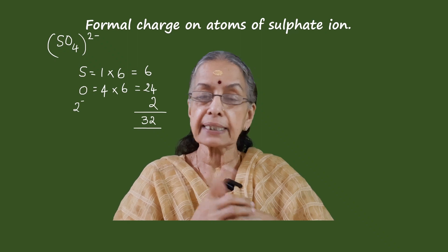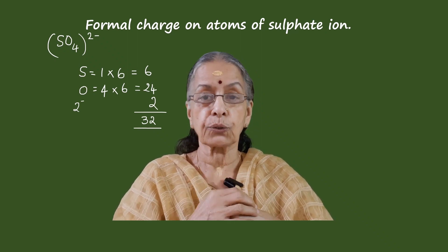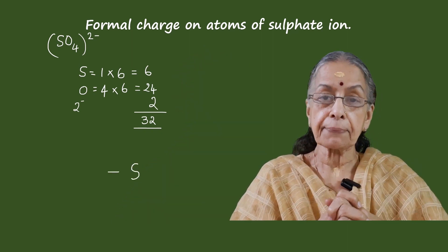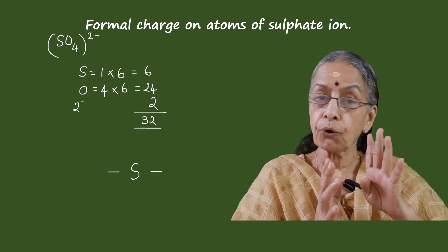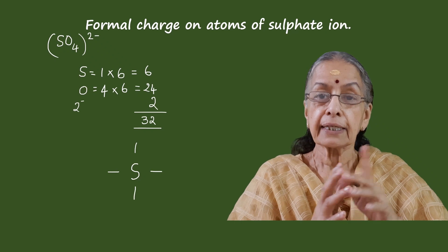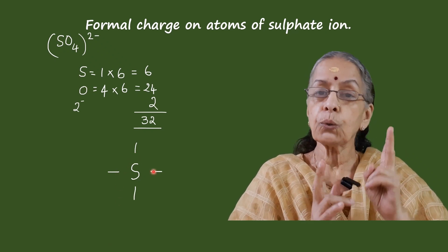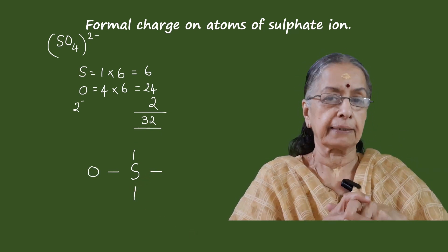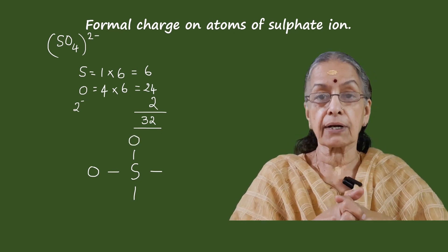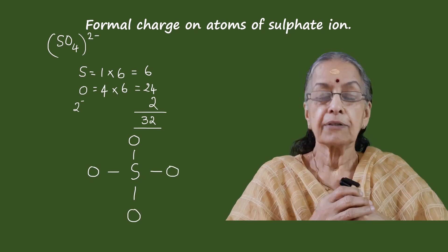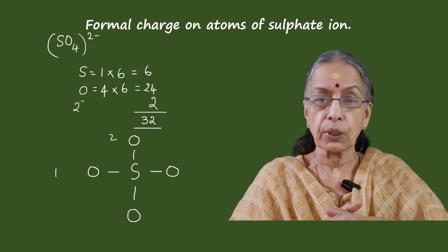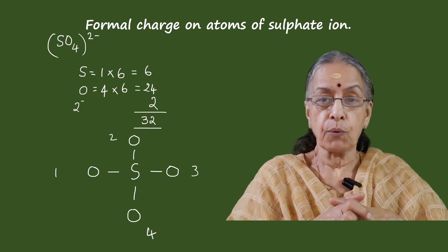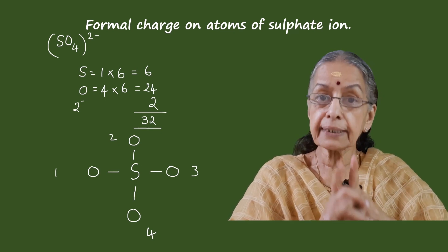The central atom will be sulfur because sulfur is less electronegative than oxygen. We first place sulfur at the center and represent four single bonds to four oxygen atoms. Four electrons in the valence shell of sulfur are used up. For convenience of explanation, we will number these oxygen atoms as one, two, three, and four.